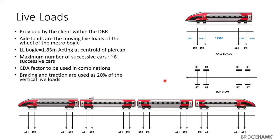Coming to one of the most important loads — live loads. The key factors are the axle load and the number of tracks. The axle load is pre-specified by codes for vehicles and cars, or the DBR specifies what the axle loads have to be. For the designs we did for Pune and Mumbai Metro, it was 8 ton, or 16 ton per axle. From the top view, you can see how it is divided per DBR at 8 ton.